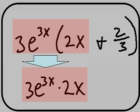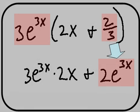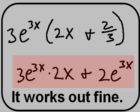3e to the 3x power. 3 times 2x gives me 3e to the 3x times 2x plus 3e to the 3x times 2 thirds gives me 6 thirds times e to the 3x, gives me 2 times e to the 3x. It works out fine.